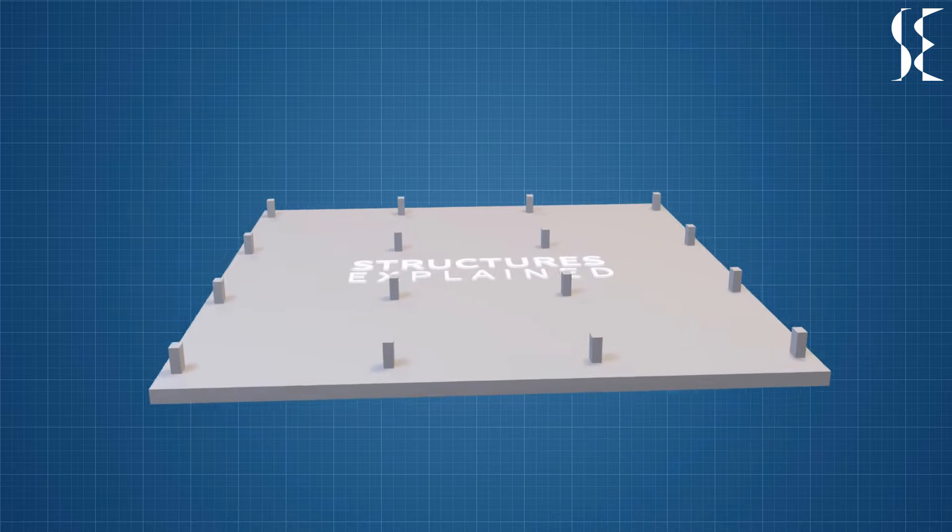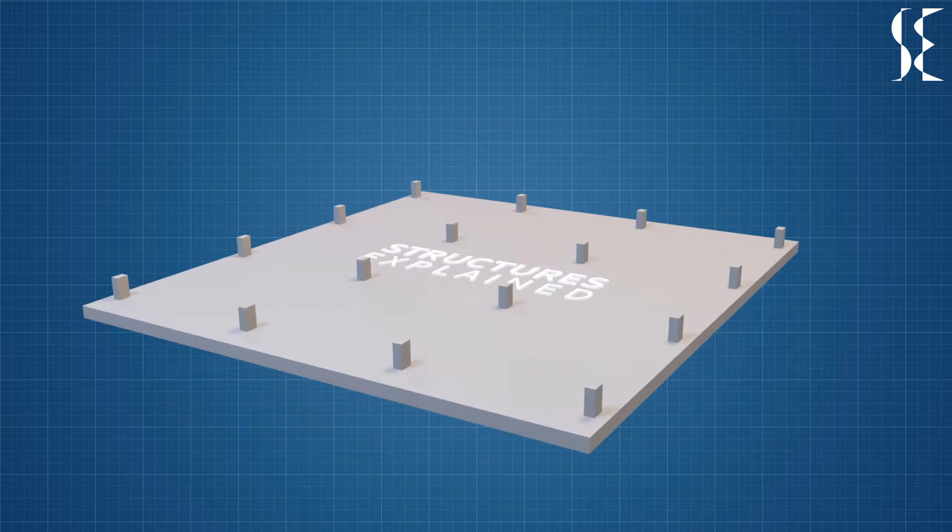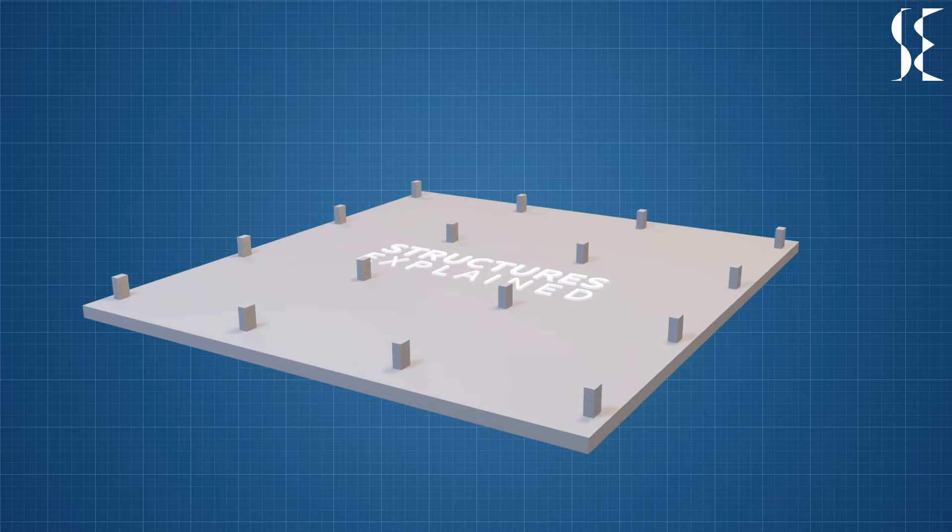Raft foundation is a type of shallow foundation which is a thick reinforced concrete slab spread over large area of soil. It provides support for several columns and load bearing walls. This type of foundation is provided when the column loads are heavy or the safe bearing capacity of soil is low.